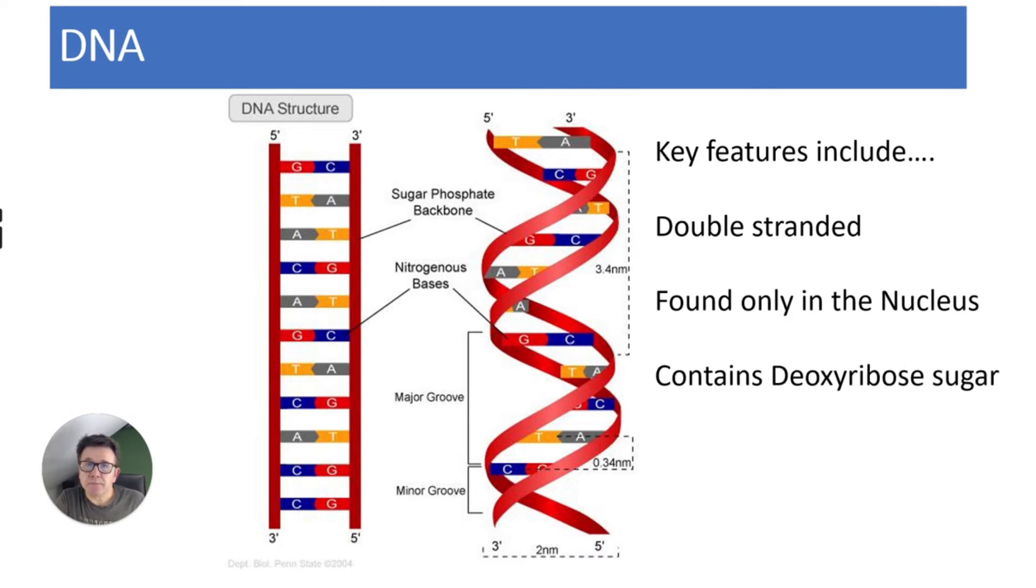It contains deoxyribose sugar. It contains thymine, and that's quite important when I talk about mRNA and tRNA. So it contains the four bases: adenine, thymine, cytosine, and guanine. But thymine is the important one here in DNA. It also contains hydrogen bonds that attach the bases, and there are other bonding structures in DNA as well.